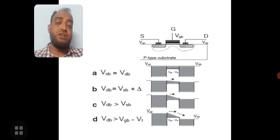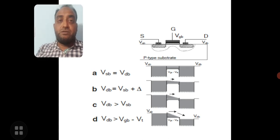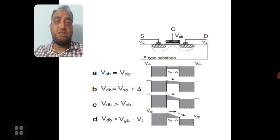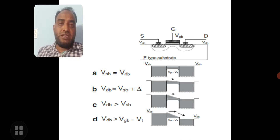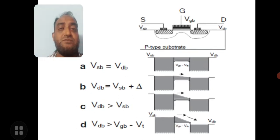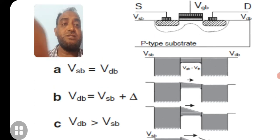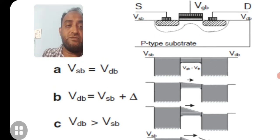Now in case A, if you see here, Vsb is equal to Vdb. When both the potentials are same, as just now we have discussed, for water or liquid to move from one place to the other place, the level potential should change. When both the potentials are same, we cannot expect the current from source to drain or drain to source can take place. So it won't move as you can observe from this diagram. Even though there is a channel, there is no moment of current.